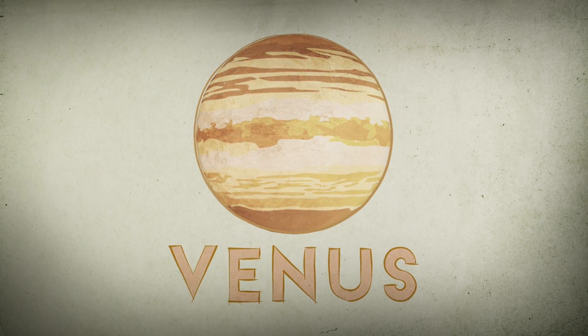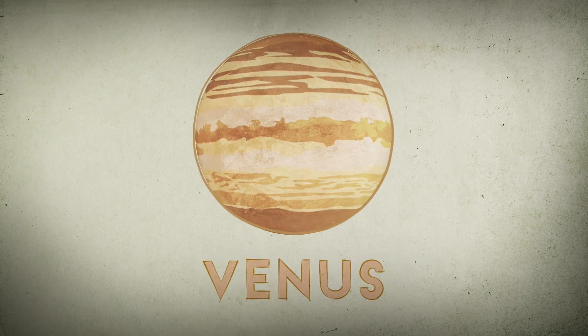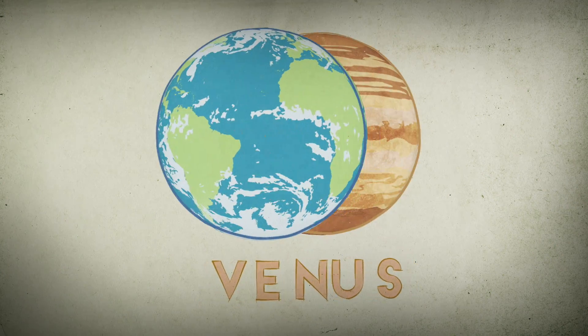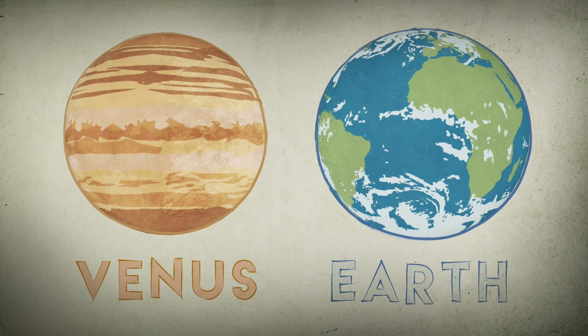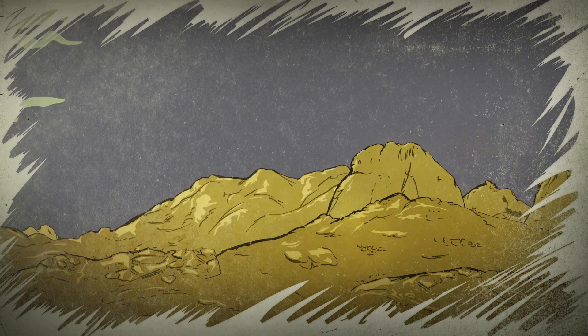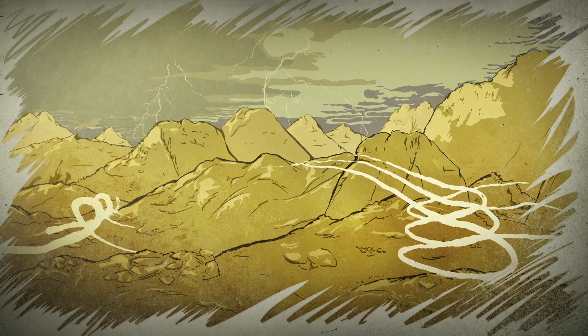Venus is cool, Venus is awesome. Venus is in many ways one of the most Earth-like planets that we know of. One of the key ways that it's different is that it's very, very dry.